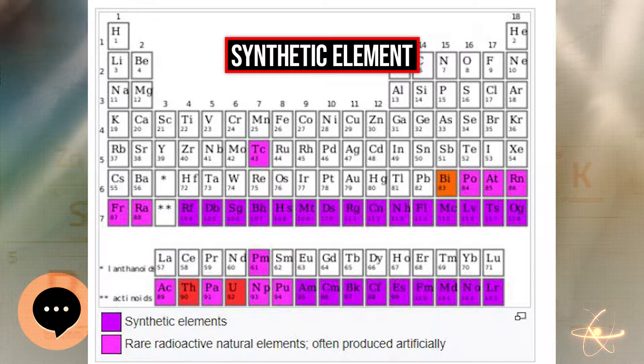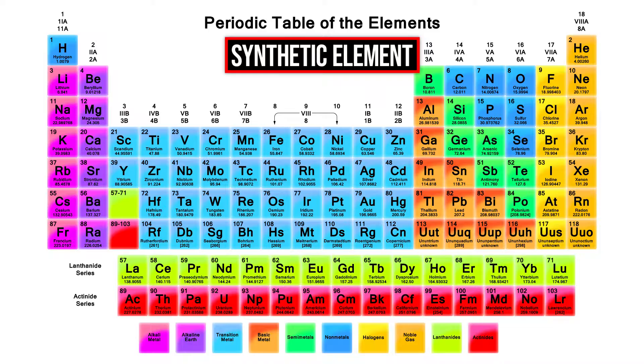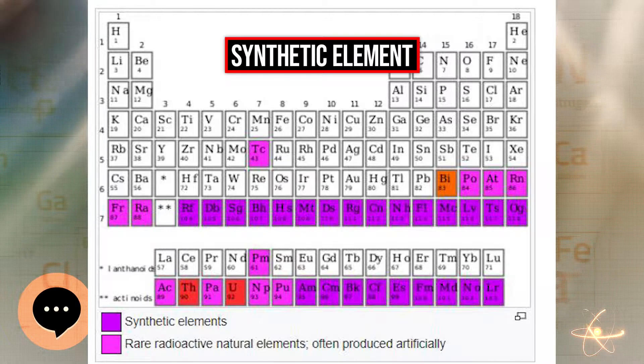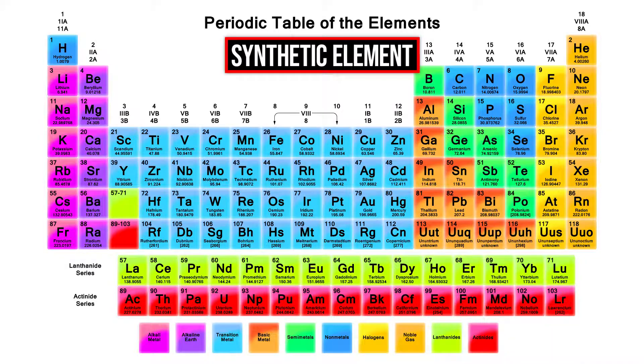Atomic mass for natural elements is based on weighted average abundance of natural isotopes that occur in Earth's crust and atmosphere. For synthetic elements, the isotope depends on the means of synthesis, so the concept of natural isotope abundance has no meaning.